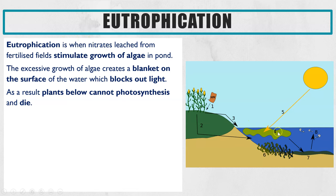If the fertilizers reach rivers and ponds, they encourage the growth of algae within that water. You end up getting a blanket of algae on the top surface — often called an algal bloom. That blanket of algae blocks sunlight from reaching any of the plants lower down in the water.